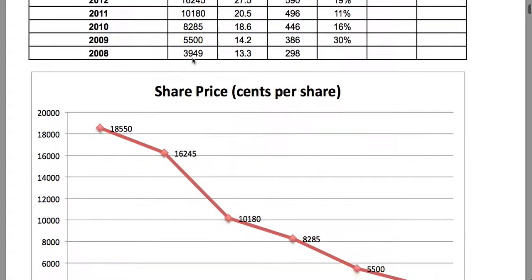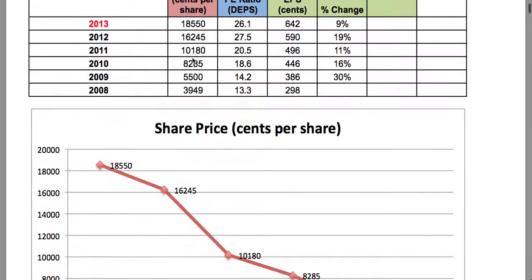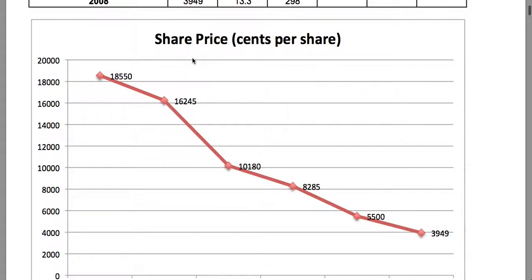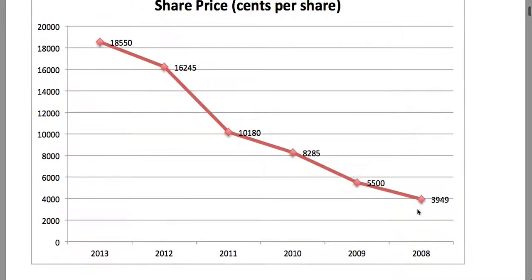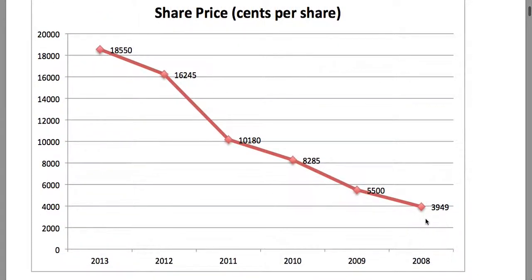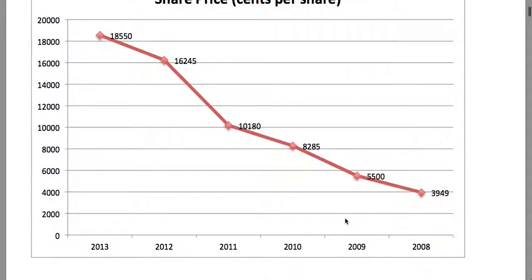Considering the share price of ShopRite and the ShopRite Group at this point, we see a nice run-up since 2008. In 2008 the share price was about 39.49 per share to about 185.50 per share. So if you got in at 2008 to this point you would have done very well.